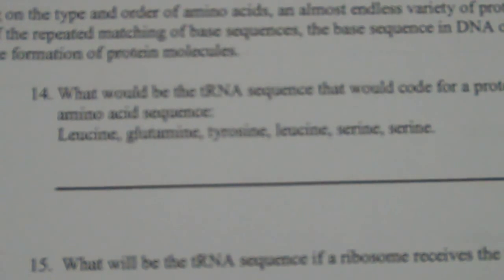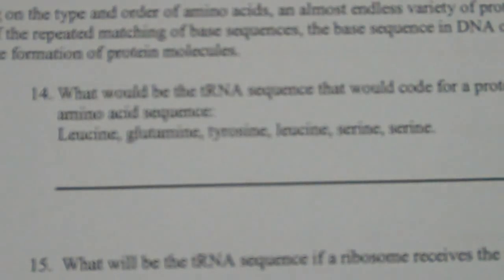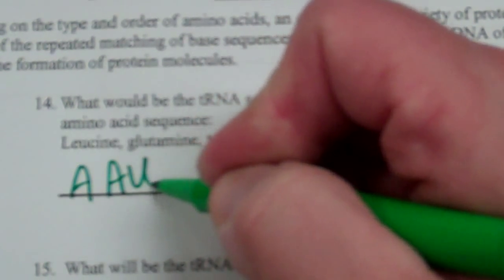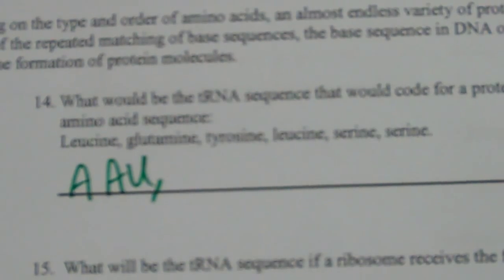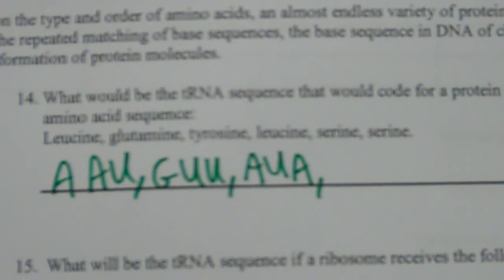So you look in your lab at the table that was given — the table has a very small font. You look up leucine; it's really hard to read on screen, but leucine is the fourth one down on your table. You find out that leucine's code is AAU. Then you look up glutamine, and the code is GUU. You look up tyrosine, and it's AUA. You look up leucine again, and it's AAU.